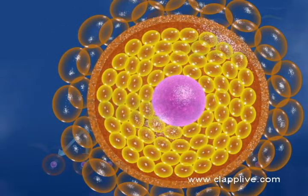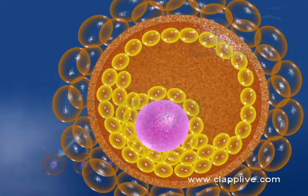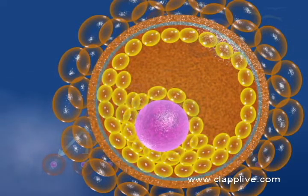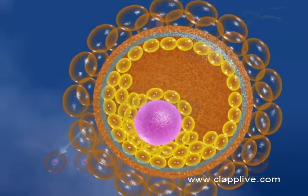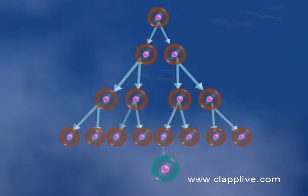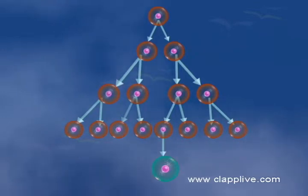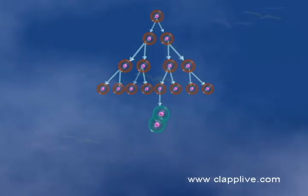Each secondary follicle then develops a fluid-filled cavity termed antrum inside it. The theca around the diploid primary oocyte divides into inner theca and outer theca. Thus, a secondary follicle transforms into a tertiary follicle. The fully grown primary oocyte inside the tertiary follicle completes its first meiotic division and produces two haploid daughter cells.